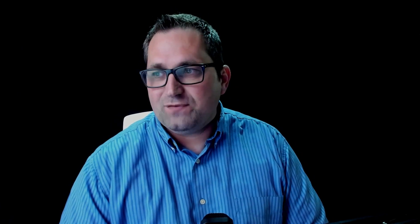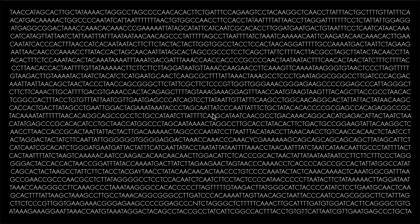If we were to take this CGAT here and take half of this double helix, and we were to map out in a typewritten form the code, it would look something like this — but it would be millions and billions of characters long. In forensics, basically what they're looking for is what are called short tandem repeats.